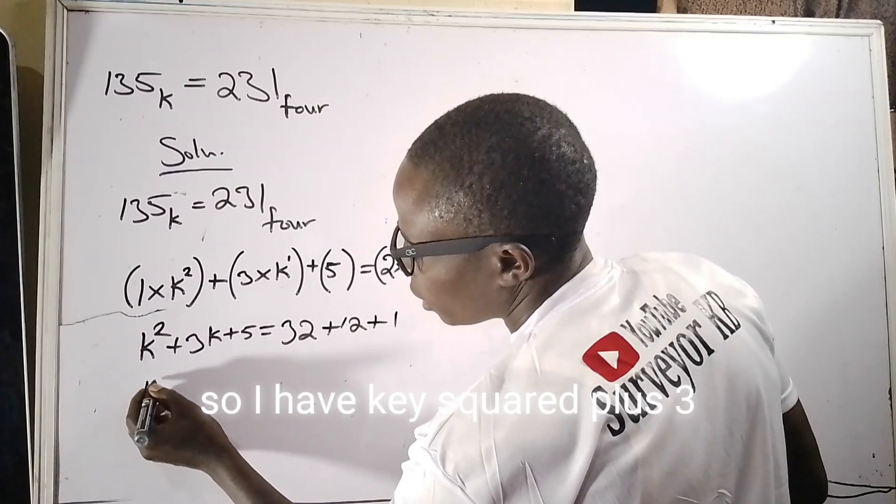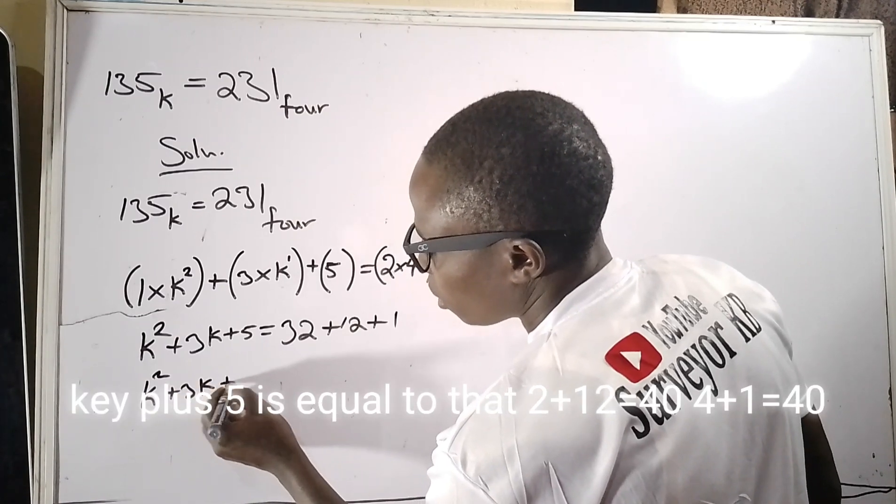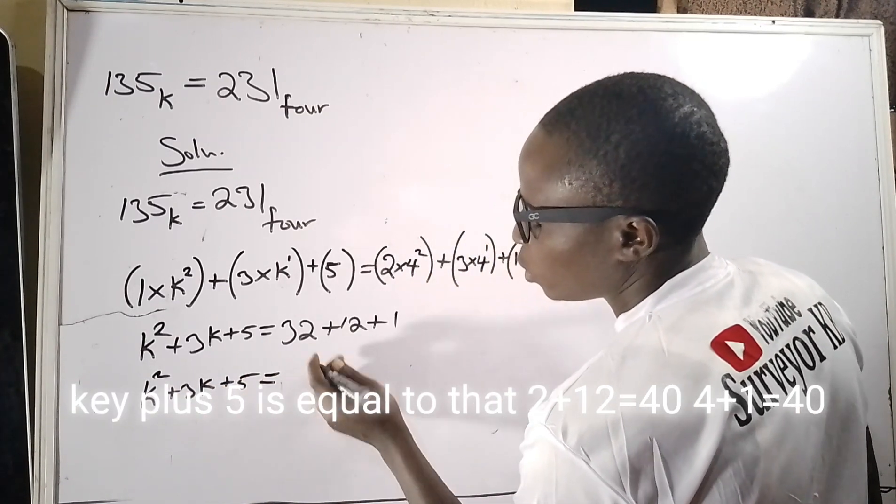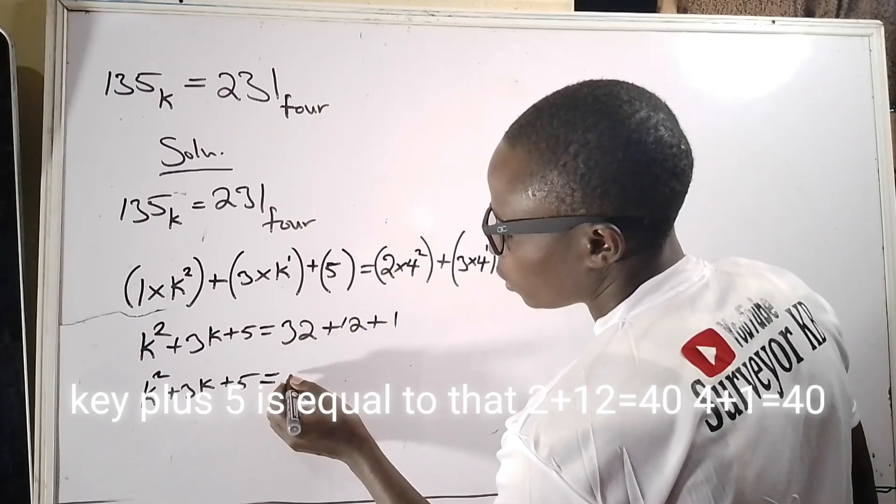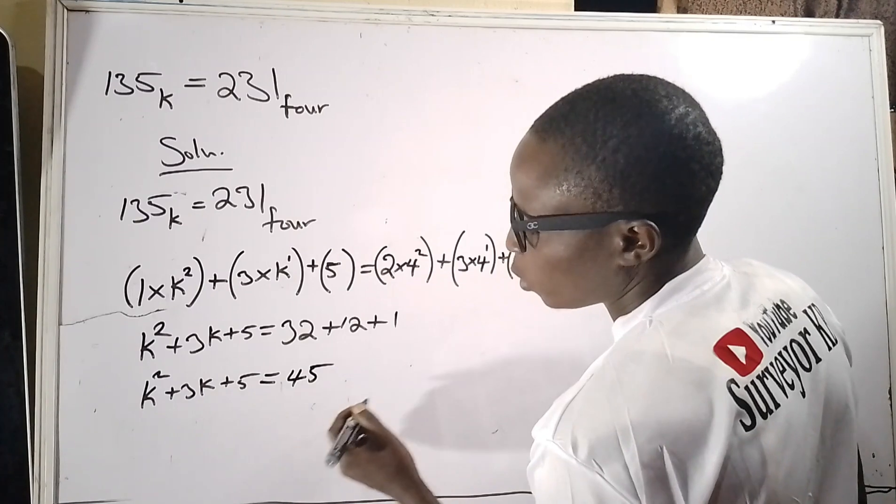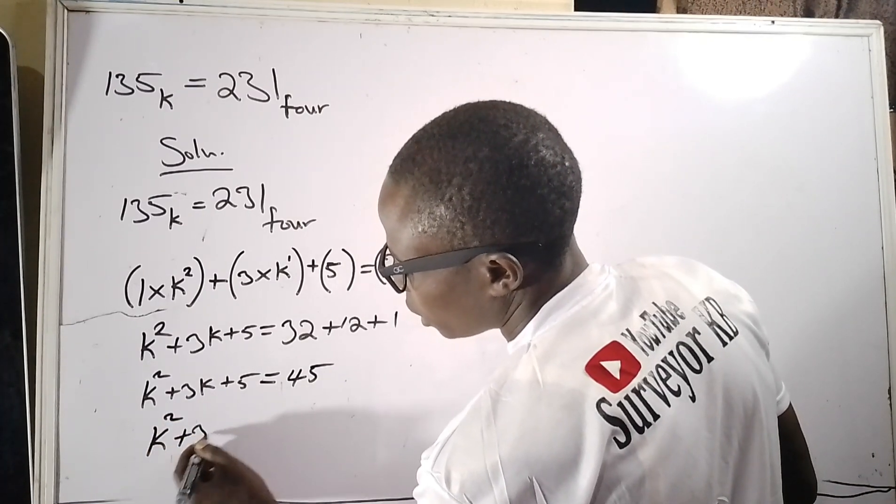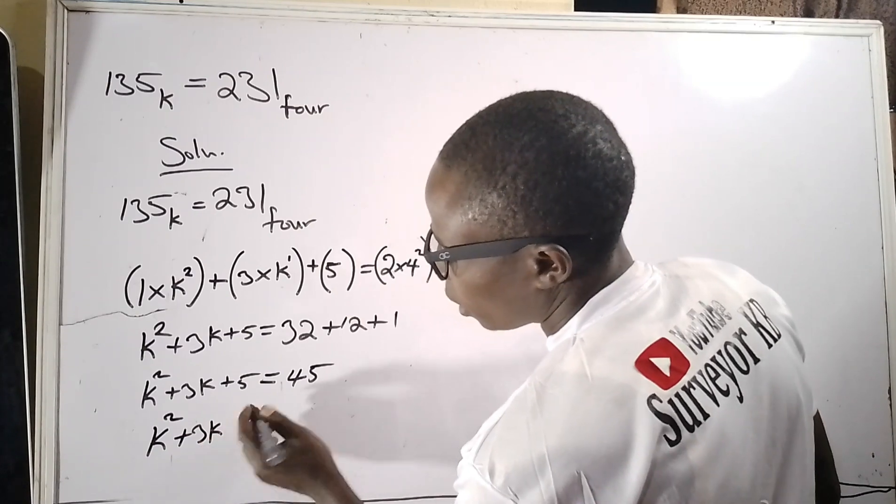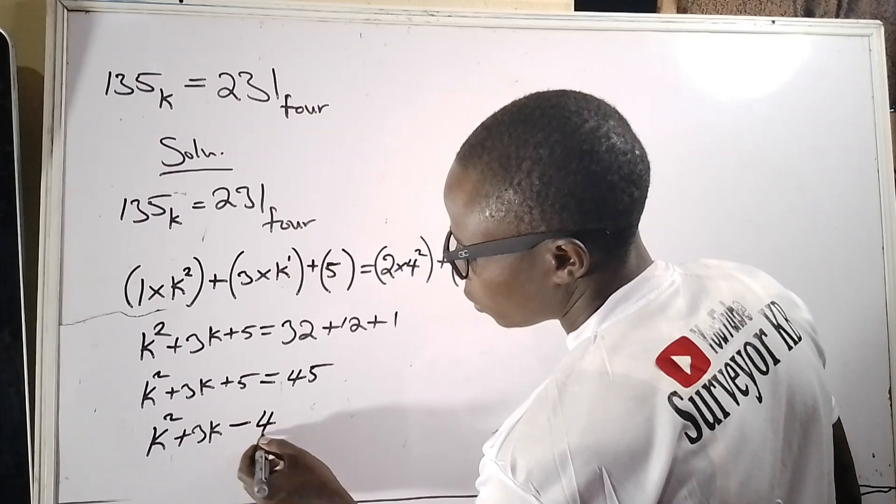Four squared is 16, 16 times 2 is 32 plus 12 plus 1. So I have k squared plus 3k plus 5 equals 32 plus 12 is 44 plus 1 is 45.